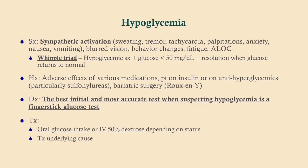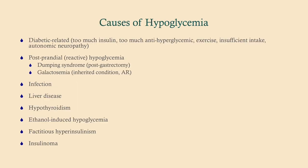The treatment for hypoglycemia is to replace the glucose. This can be done orally if the patient is alert and able to swallow — sugar absorbs pretty quickly. Otherwise, you can give D50 intravenously. Then you want to treat the underlying cause.